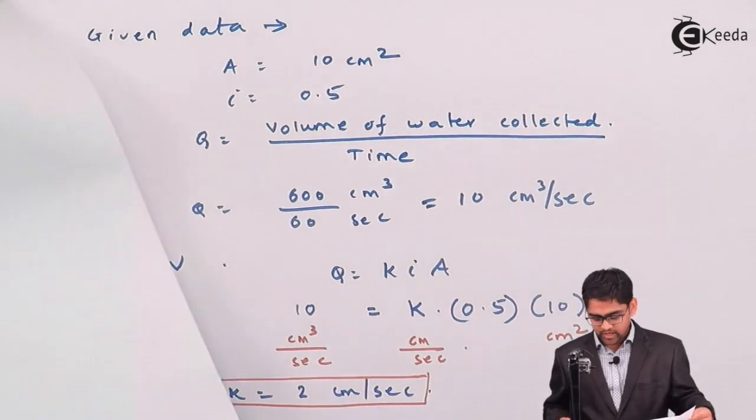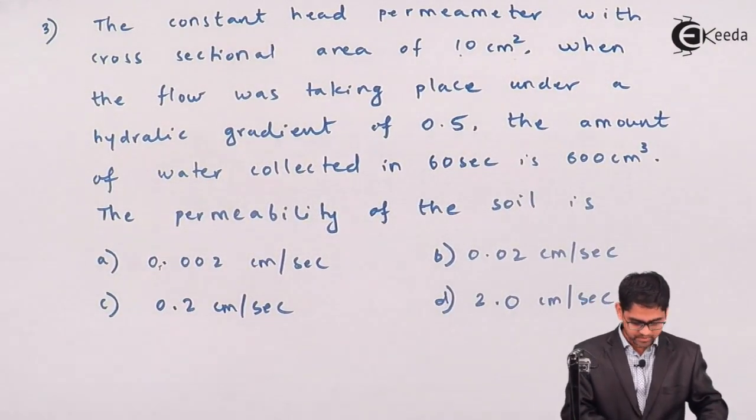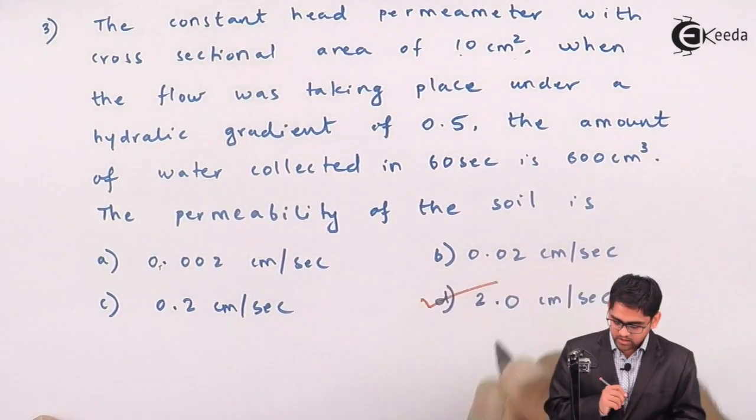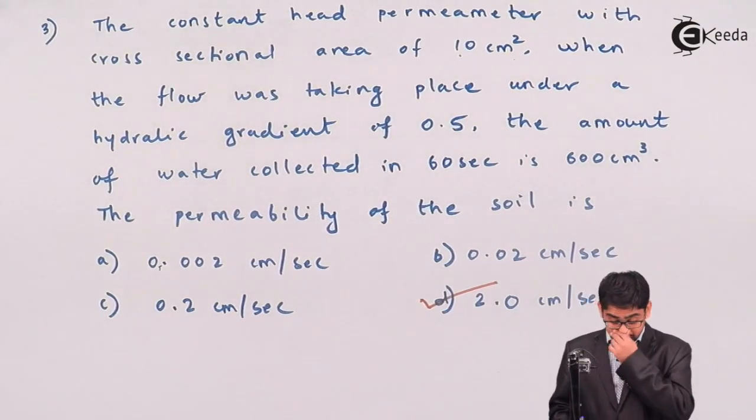But, and if you look at towards the options, you will find the option which is option number D, 2 cm per second. Correct answer is 2 cm per second.